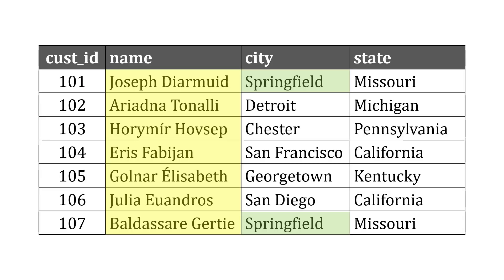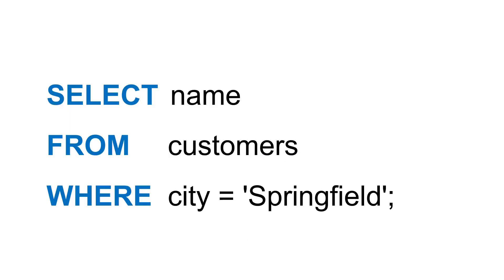We could alter this if maybe we only wanted customers from Springfield — so the first and the last name in this list. We could just adjust that previous statement: SELECT the name from the customers table WHERE the city is equal to Springfield. So we filter it for that condition.